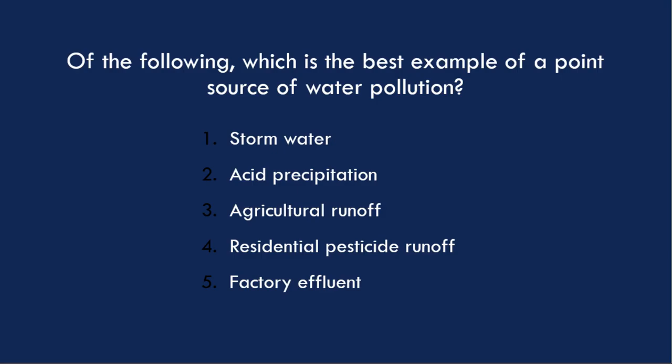Which would be the best example of a point source of water pollution? A point source is something that has an identifiable direct source. So factory effluent would be a point source. Stormwater, acid precipitation, agricultural runoff — any runoff, actually — are hard to locate where they come from specifically.